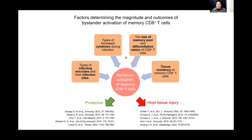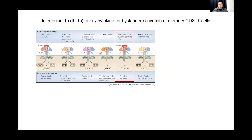One of the questions most frequently asked is the role of bystander-activated memory CD8 T-cells, whether they provide protective or harmful effects to the hosts. From accumulating evidence, we were able to see that the magnitude and the role of bystander-activated memory CD8 T-cells depends on a number of factors, including types of infecting microbes at their infection sites, the types of cytokines regulated during infection, the size of memory pool of the host, differentiation status of CD8 T-cells, and their tissue residency. Among various inflammatory cytokines, IL-15 has been recognized as the major trigger of bystander activation of memory CD8 T-cells.